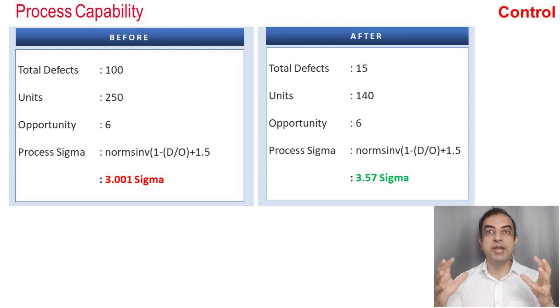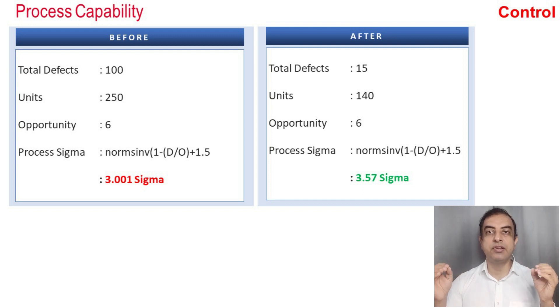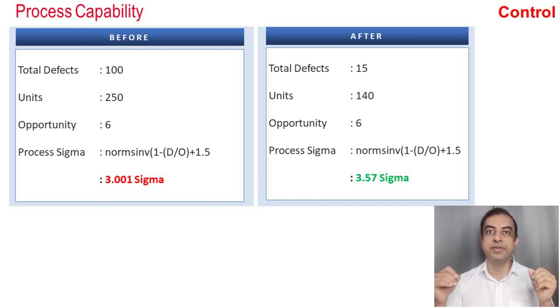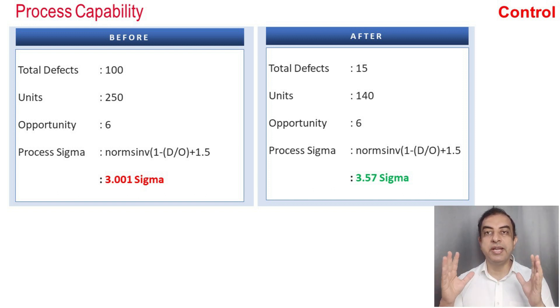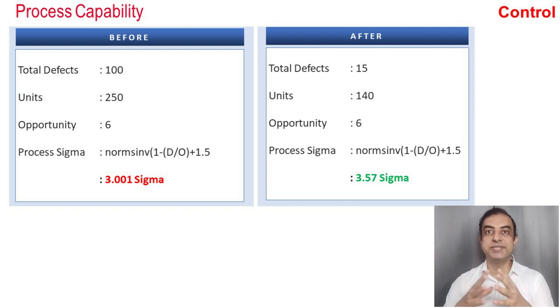After implementing all the solutions, the project generated an impact of $250K. I hope you would have got an idea of how to implement DMAIC methodology in IT projects. Friends, if you like this video, please give it a thumbs up and share it with your friends. Thanks for watching.